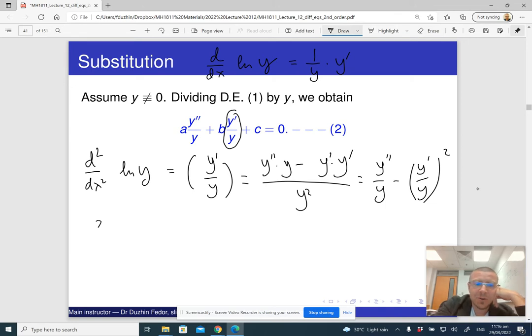So it means that if now I introduce the new variable z, which is logarithm of y, then y prime over y becomes just z prime, and y double prime over y becomes what? Becomes z double prime plus z prime squared.